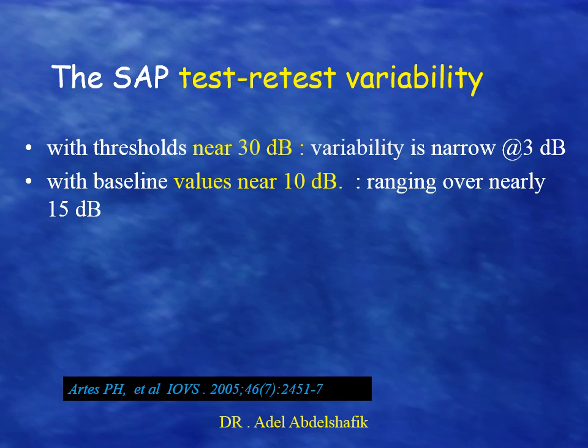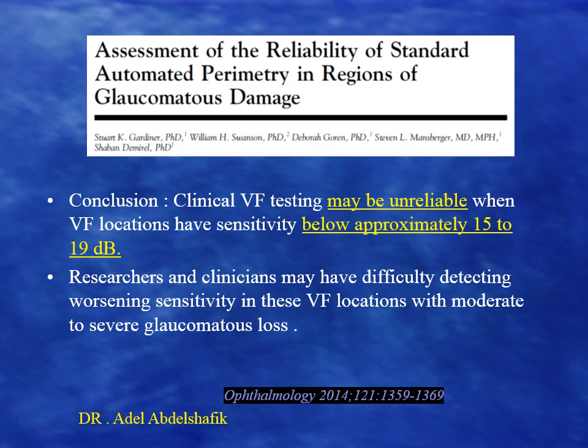A more recent study in 2005 confirmed these findings, showing that with a threshold near 30 decibels, the variability in follow-up is narrow — around 3 decibels — while in areas with values near 10 decibels, the range of fluctuation is nearly over 15 decibels. Again in 2014, similar results were found: clinical visual field testing may be unreliable when visual field locations have sensitivity below approximately 15 to 19 decibels.